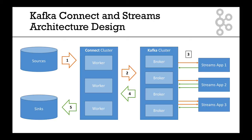That's your typical Kafka Connect and Kafka Streams architecture. To summarize: data comes from your source, goes into your Connect cluster made out of workers, and pushes that data to the Kafka cluster. A Streams API — could be Spark, could be Kafka Streams — transforms that data from and to Kafka. Then your Connect cluster pulls the data from Kafka and writes it to the Sinks you've configured.